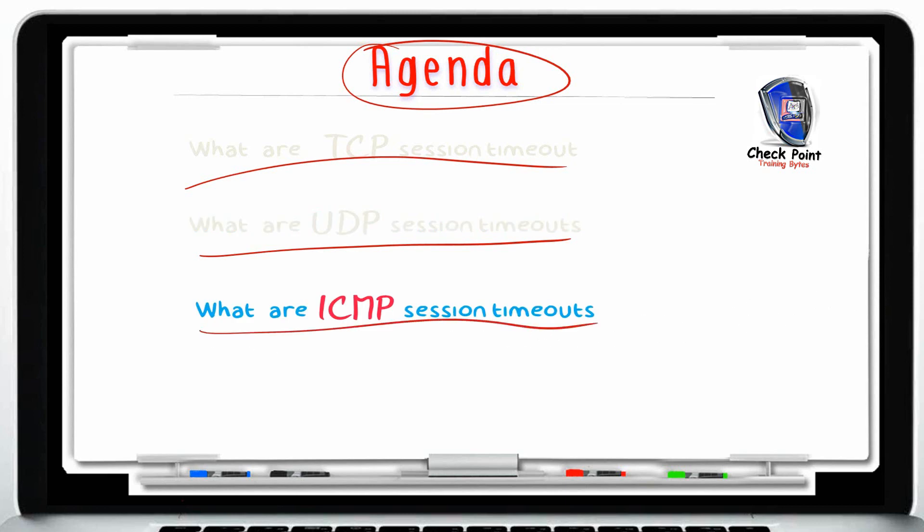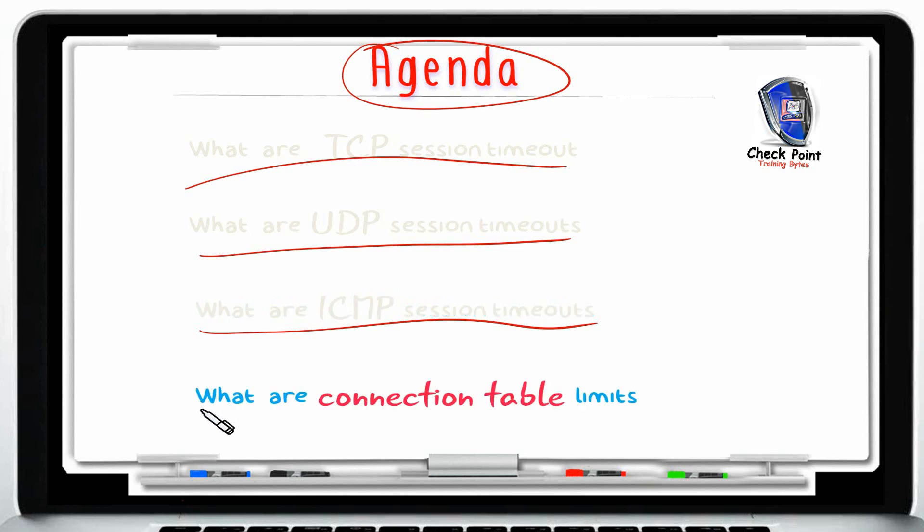Next, we will continue our discussion with the ICMP protocol — how a Stateful Inspection Firewall protects the integrity of an ICMP session. And finally, we will end this module by talking about the connection table, discussing why you need to check the connection table size and when it is appropriate to increase the connection table limit.